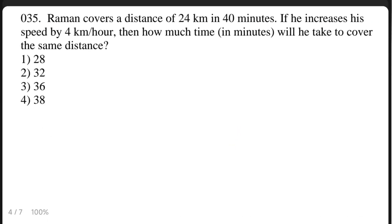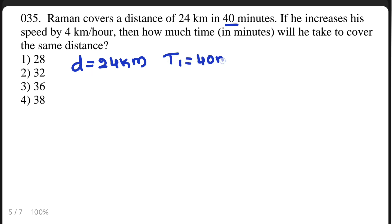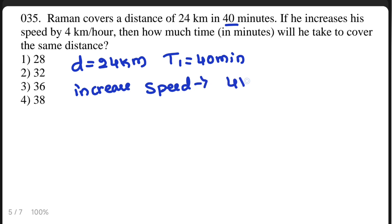The 35th question: Raman covers a distance of 24 km in 40 minutes. If he increases his speed by 4 km per hour, then how much time in minutes will he take to cover the same distance? First, note that distance = 24 km and T1 = 40 minutes. The increased speed is 4 km per hour.